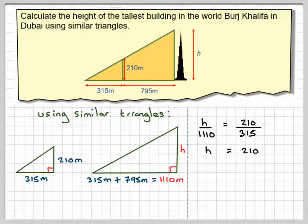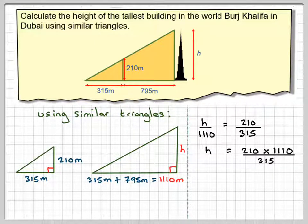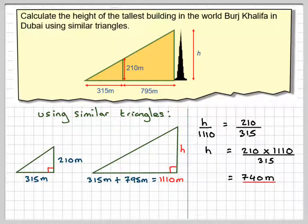So that's going to give me 210 times 1110 divided by 315, and then on my calculator that will give me 740 metres, which is approximately the height of the tallest building in the world.